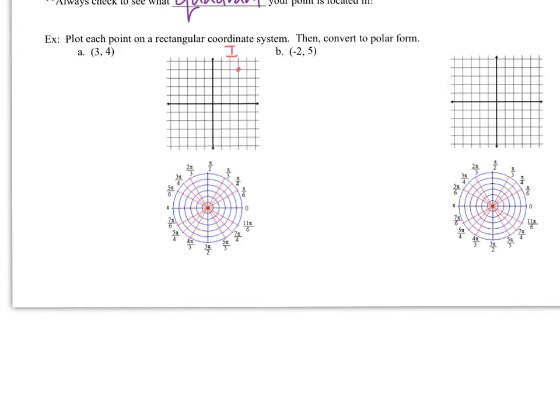Now to convert it to polar form, we apply those definitions from up above. To get the r value, that'll be our first step. We use the definition r squared equals x squared plus y squared. If we substitute in 3 and 4 for x and y, we have r squared equals 3 squared plus 4 squared. 3 squared is 9, 4 squared is 16, making r squared equal to 25. If we take the square root to get r by itself, r can equal positive or negative 5. In our case, we'll just pick positive 5. That's step 1.